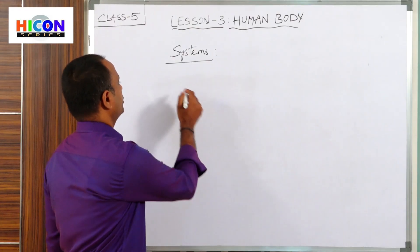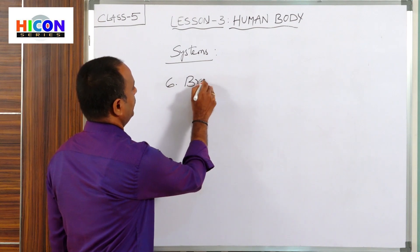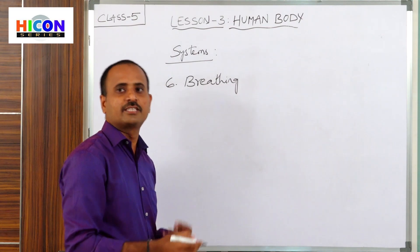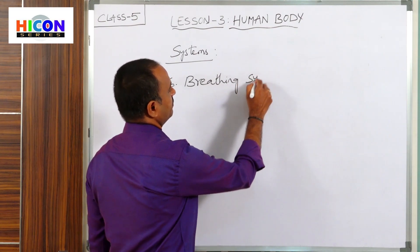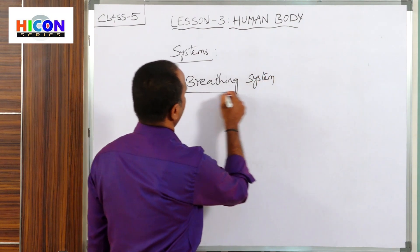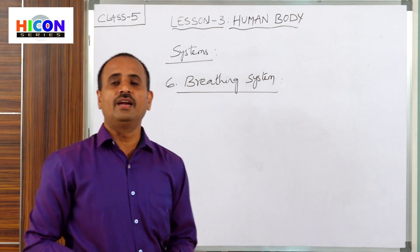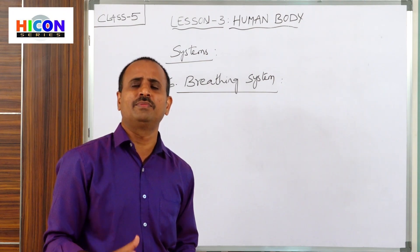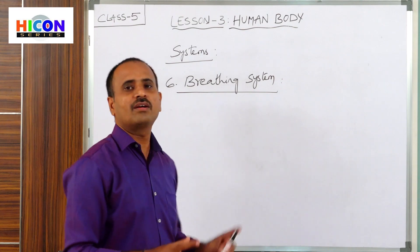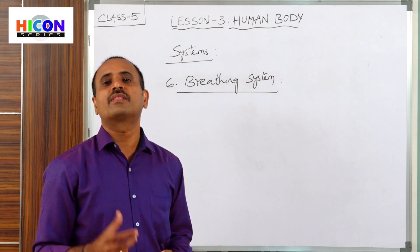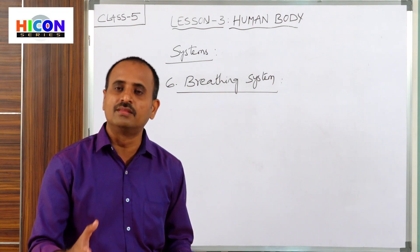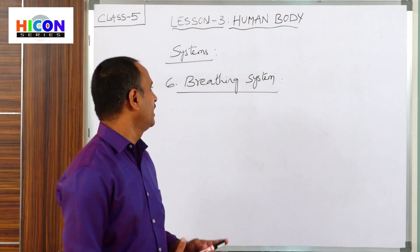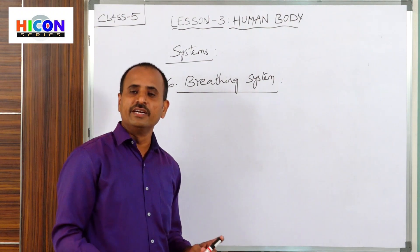So what is the sixth system? The breathing system, or it can also be called the respiratory system. So children, what is breathing? We have already learnt in previous classes that every living organism — that is plants and animals — needs oxygen for their survival. That is why they breathe air. If they do not breathe air, they will die.